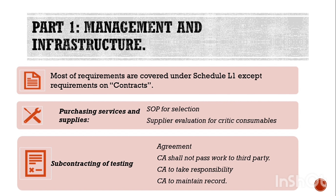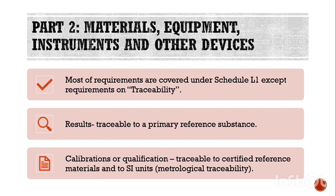The contract acceptor should accept responsibility for investigation of OOS complaints and maintain records of all activities. Regarding Part 2 of WHO TRS, which covers materials, equipment, instruments, and other devices — most requirements are already covered — except traceability. WHO TRS clearly states that your results must be traceable to certified reference material and SI units. That is, metrological traceability is expected by WHO TRS.